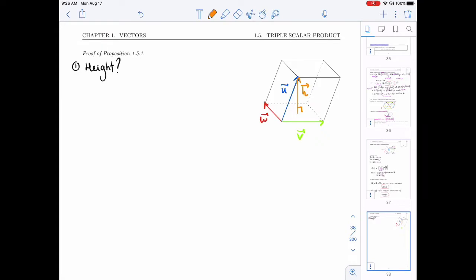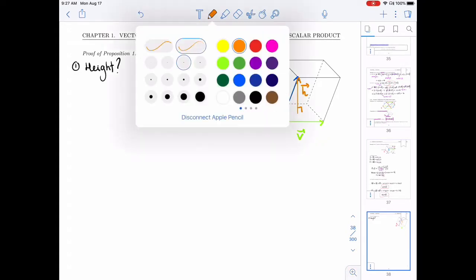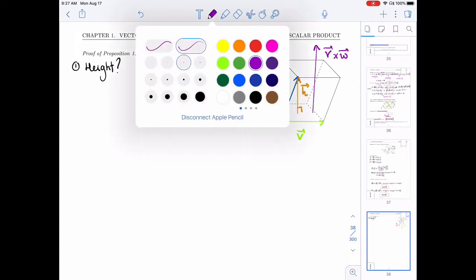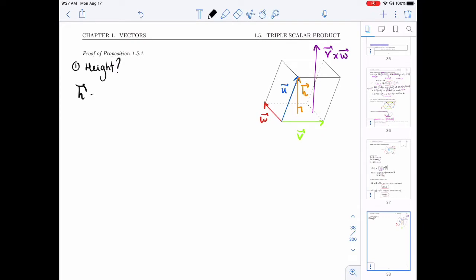All right, so I want, in some sense, the part of u that's perpendicular to the base, so perpendicular to both v and w. We know that v cross w is perpendicular to both v and w. And so what we really want, h is going to be the part of u which is in the direction of v cross w.